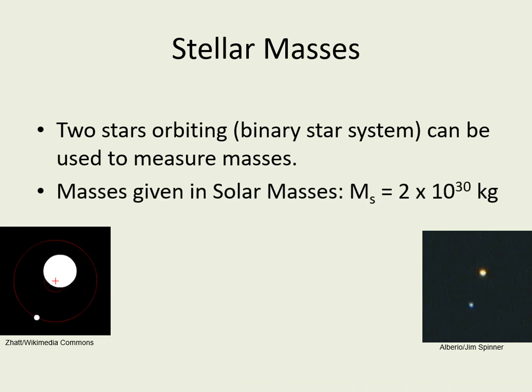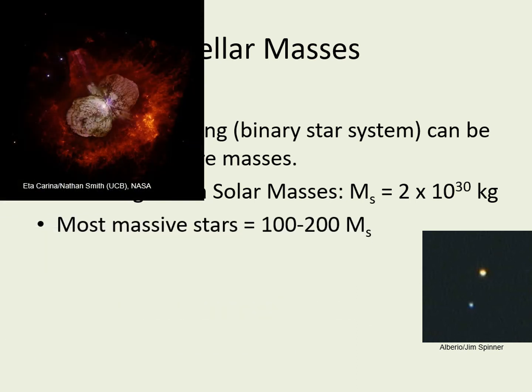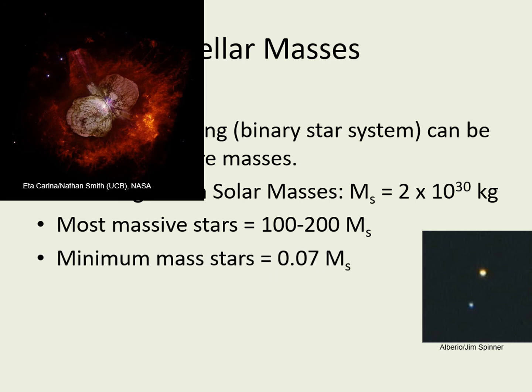We usually list star masses in solar masses. Remember that a solar mass is 2 times 10 to the 30th kilograms. The most massive stars we see are between 100 and 200 solar masses, and there are very few of these in our galaxy. The smallest stars have as little as 0.07 solar masses, and these very low mass stars are the most abundant around us.